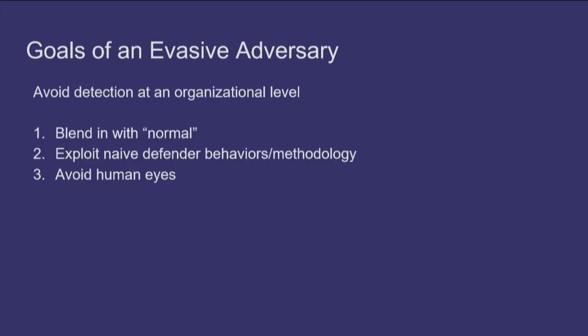The goal of an evasive adversary is to avoid detection at an organizational level. If AV catches something but it's not forwarded to the back end where the SOC can analyze it, detection has still failed because the adversary is going undetected at the organizational level. This can be accomplished by blending in with normal activity, exploiting defender biases when writing detection rules, and in general avoiding human eyes altogether. If we can subvert the detection tools or data sources, we'll be successful.